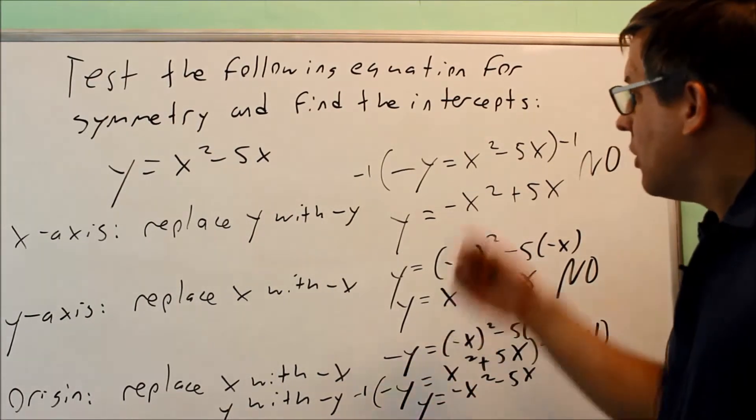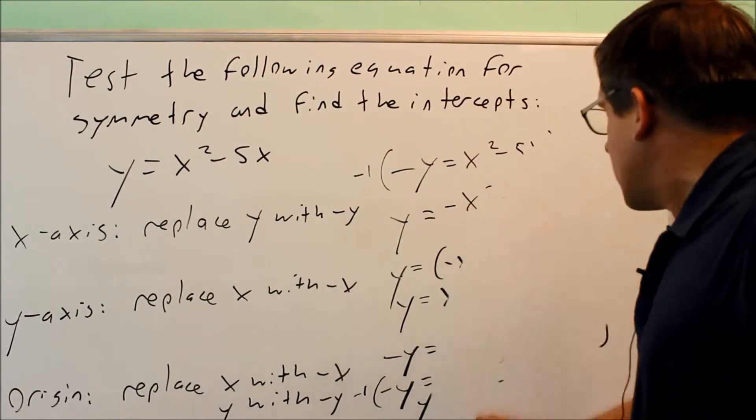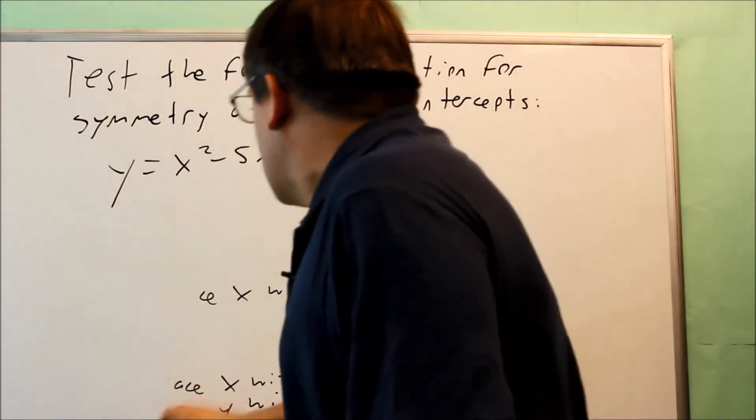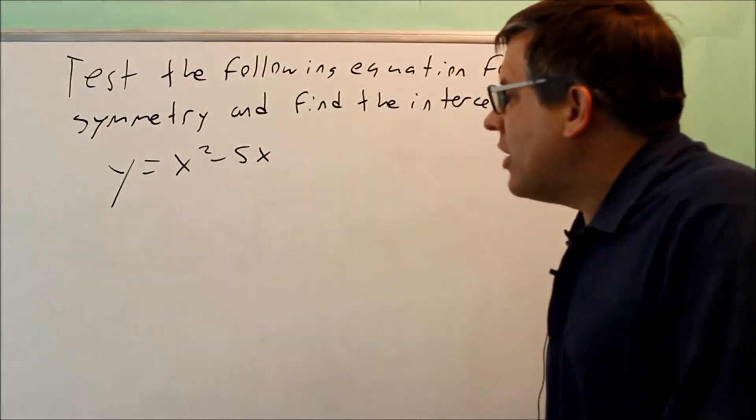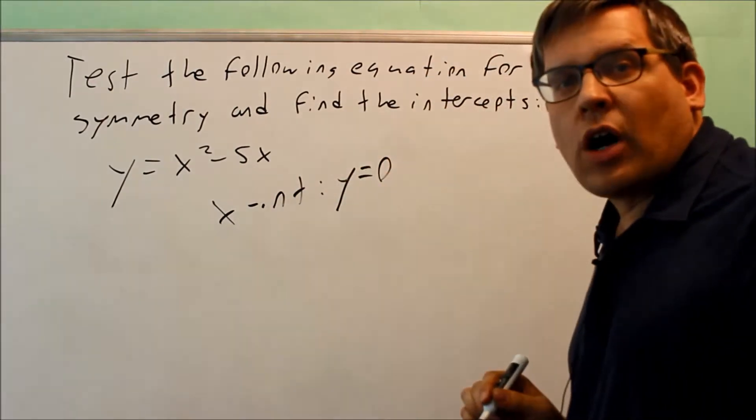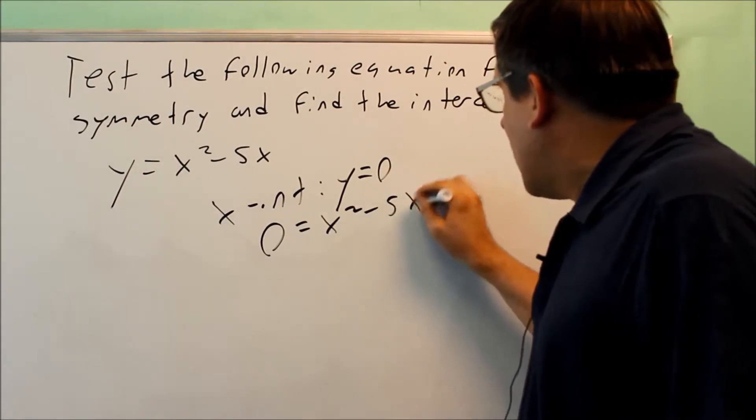Now we'll find the intercepts. To find the x-intercept, we set y = 0. This gives us 0 = x² - 5x.